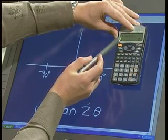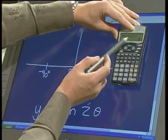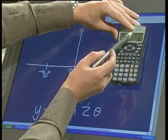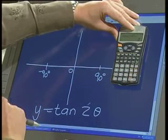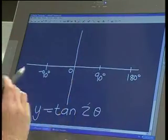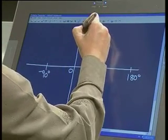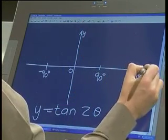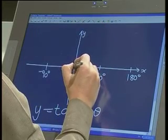2 times, and then whichever theta we like, let's say we say 0, close the bracket. There you have it. I hope you can see this. Tan, open bracket, 2 times 0, close bracket, equals. It gives me 0. So in line with 0, the point that I get is in fact still 0.